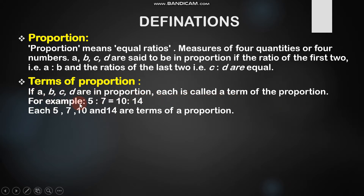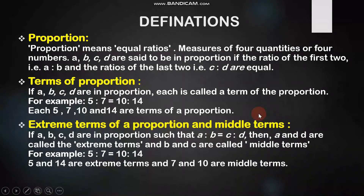The next terms are extreme term and middle term. If A, B, C, D are in proportion, then A and D are the extreme terms and B and C are the middle terms. For example, in 5 ratio 7 proportional to 10 ratio 14, the numbers 5 and 14 are the extreme terms and 7 and 10 are the middle terms.